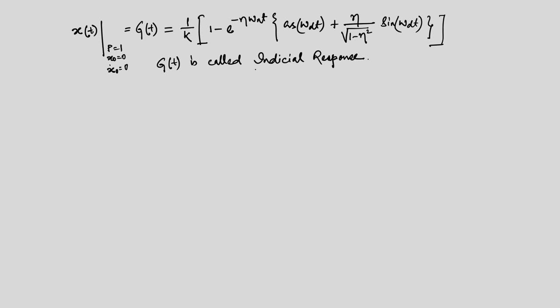Using this information we will further solve the problem and see how we can find out the response of a system due to an impulse. What does impulse mean? Say we have an impulse at t = t*. For that we will use the indicial response information. Now let us extend this derivation to find out the response due to an impulse. For that, let us define a function called the Heaviside step function.